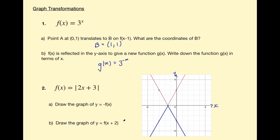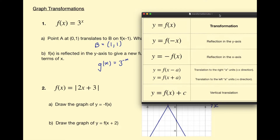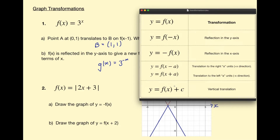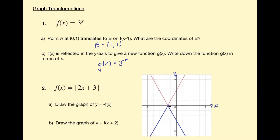Part B says draw the graph of y equals f of x plus 2. Checking our rules: when the change is inside the brackets with a positive number, we're translating the graph to the left in the negative x direction. So f of x plus 2 translates the graph left 2 units. The point at the bottom translates 2 units left to (-3.5), the point (-3, 3) translates to (-5, 3), and the point translates to (-2, 3). With those points and straight lines, we can draw the new graph — that is f of x plus 2.